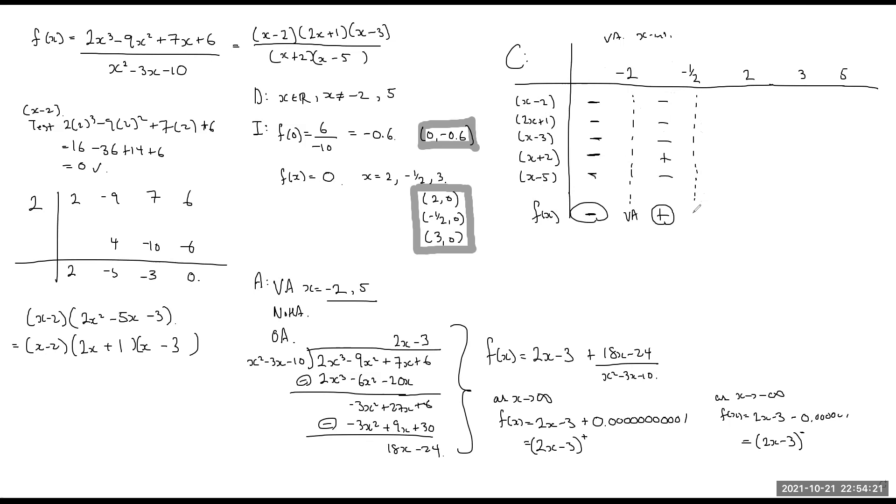When x equals negative half, my y value is a 0. In between these two, I'm going to try a 0. 0 minus 2, 0 plus 1, 0 minus 3, 0 plus 2, 0 minus 3. That's going to be a negative.